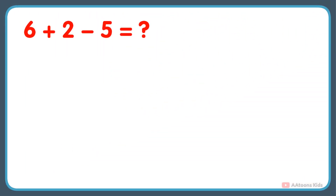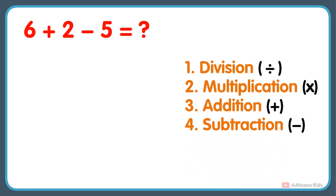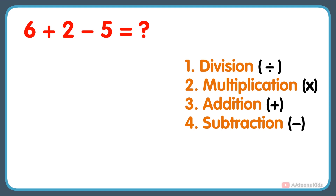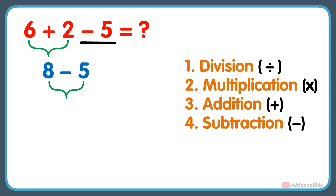What is 6 plus 2 minus 5? In this problem, two operations — addition and subtraction — are given. So according to the order, we would first perform the addition: 6 plus 2 gets 8. And next, subtract 5 from the result, and you will get your answer: 8 minus 5 equals 3.